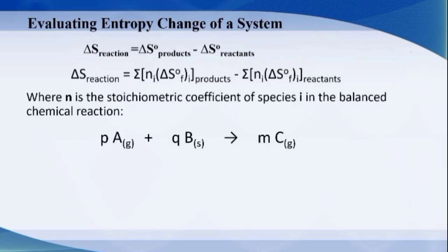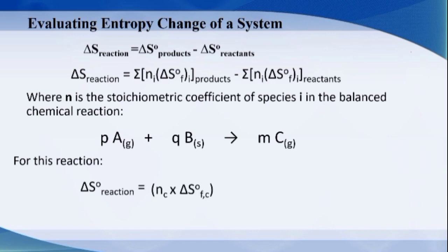For the theoretical equation pA + qB → mC, the capital letters represent the species. The species can be elements or compounds, while the small letters represent the stoichiometric coefficient or number of moles. Using the summation formula, the entropy change of the reaction equals the number of moles of species C multiplied by its standard absolute entropy, minus the contributions from species A and species B.